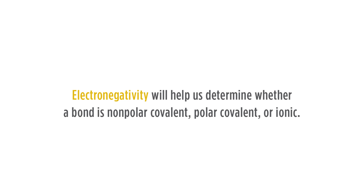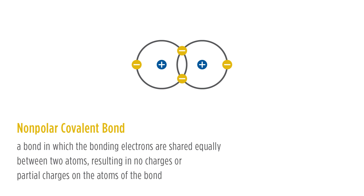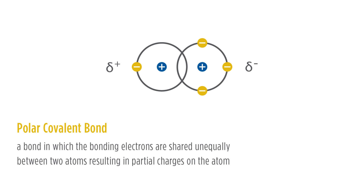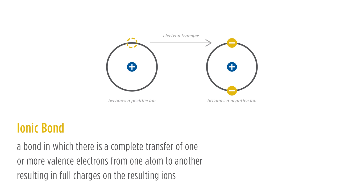Let's define these three types of bonds. A non-polar covalent bond is a bond in which the bonding electrons are shared equally between two atoms, resulting in no charges or partial charges on the atoms. A polar covalent bond is a bond in which the bonding electrons are shared unequally between the two atoms, resulting in partial charges on the atoms. An ionic bond is a bond in which there is a complete transfer of one or more valence electrons from one atom to another, resulting in full charges on the resulting ions.